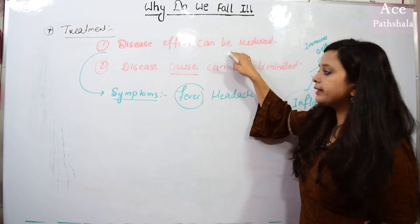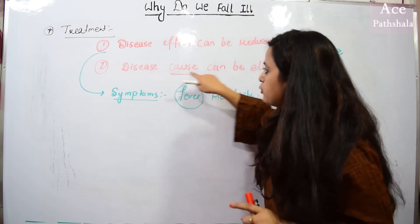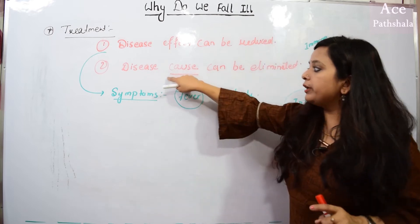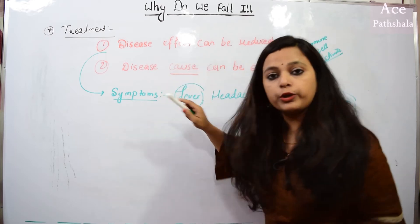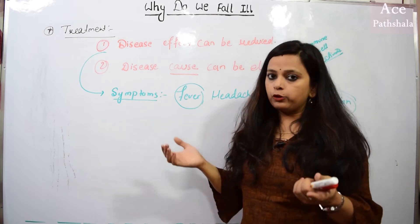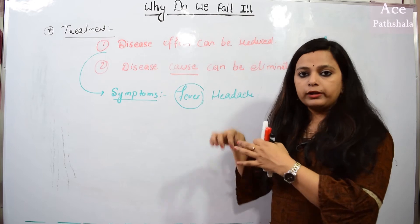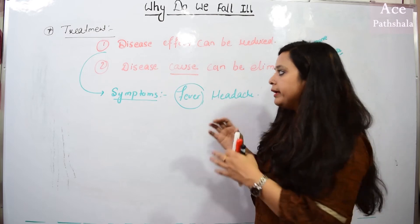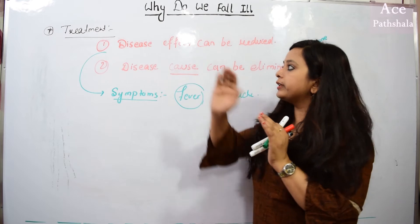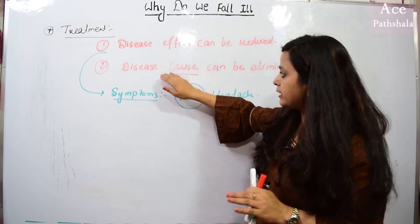But if we only reduce the effects of disease, the disease is not cured. That means we also have to eliminate the disease. How will we eliminate the disease? When we remove the causative agent — if there is a virus, bacteria, or pathogen — we remove and kill it from the body. Then the disease will be cured and treated. This is the second step when we talk about treatment.